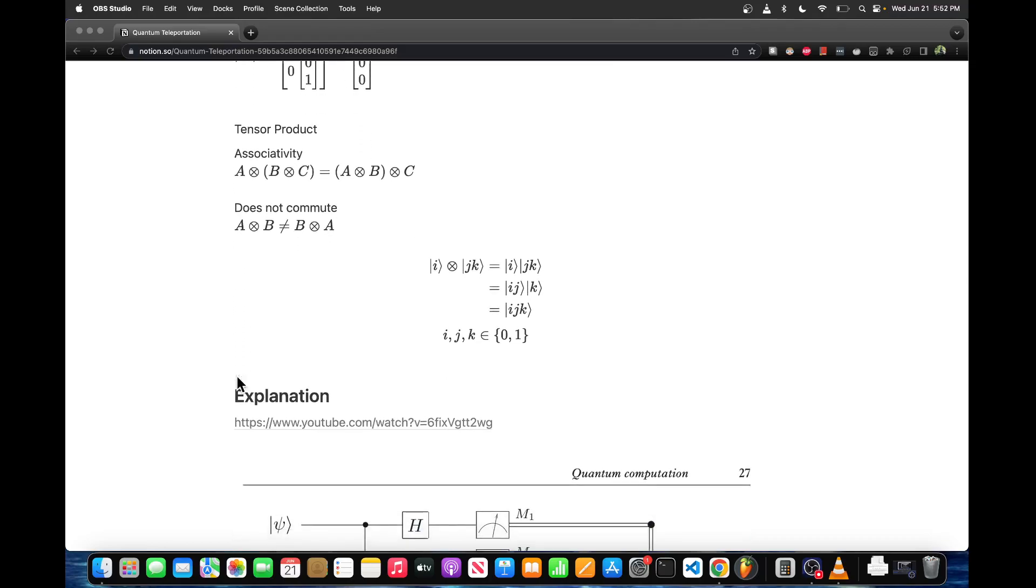Some useful properties about the tensor product: it's associative so we can group the terms however we want using parentheses, but it's important to note that the tensor product does not commute, so A tensor B does not necessarily equal B tensor A.